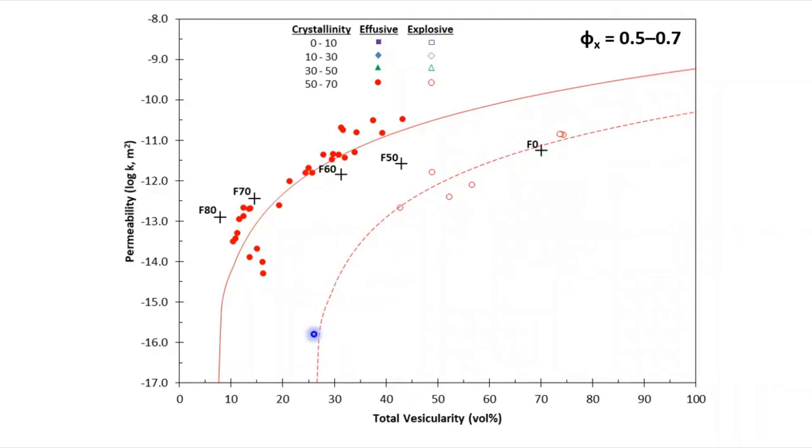Here we can clearly see there is a permeability threshold approximated by the curve for effusive lavas, at which outgassing proceeds rapidly enough that further permeability development terminates.